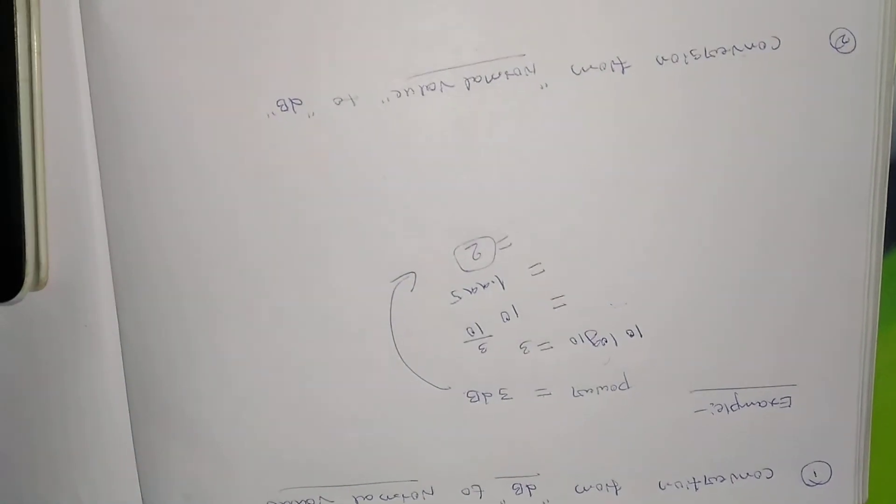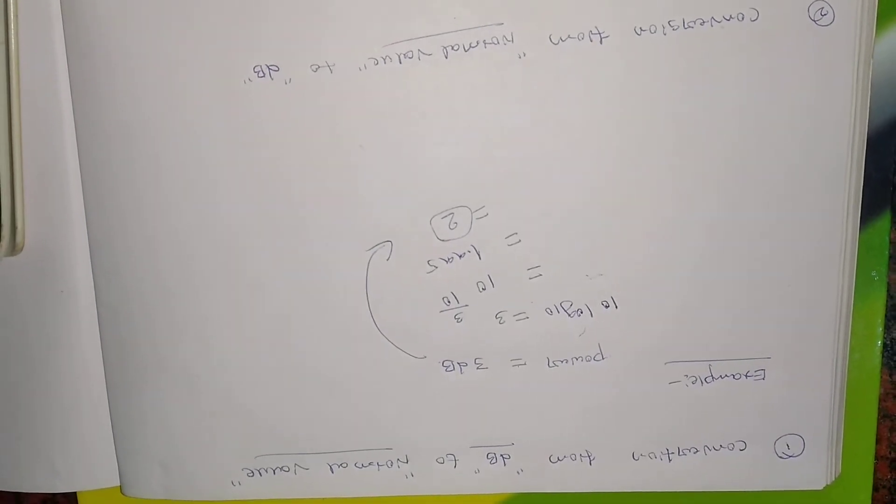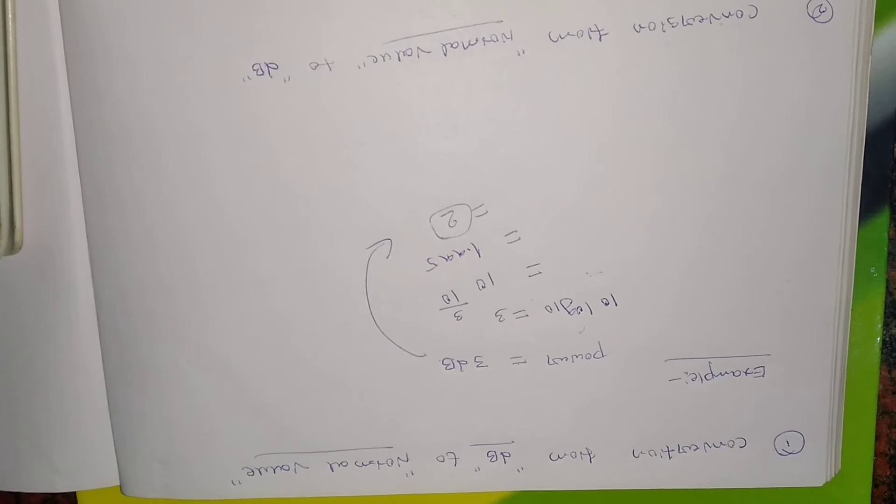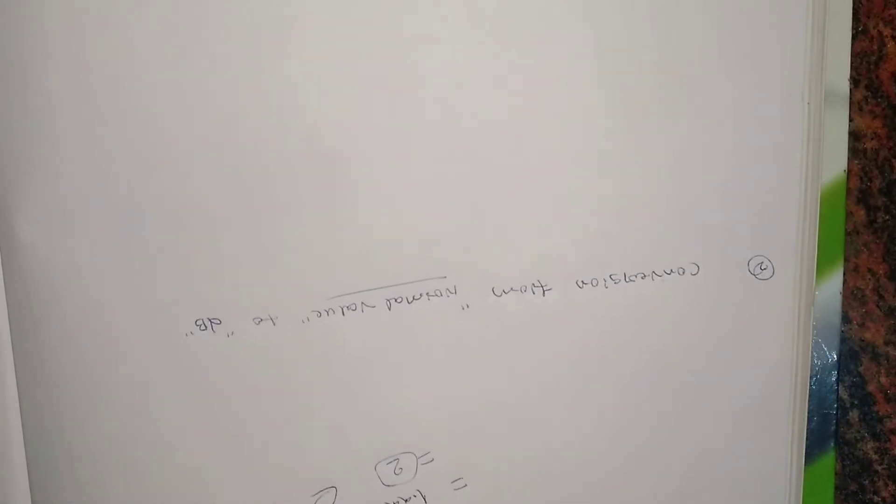So how we are getting 2 is something like this - we need to multiply with the help of 10 log 10. So now you got an idea how to convert a number from dB, that is dB sign unit, to normal scale. Now we'll try to do the opposite thing, that is how to convert from normal value to dB.